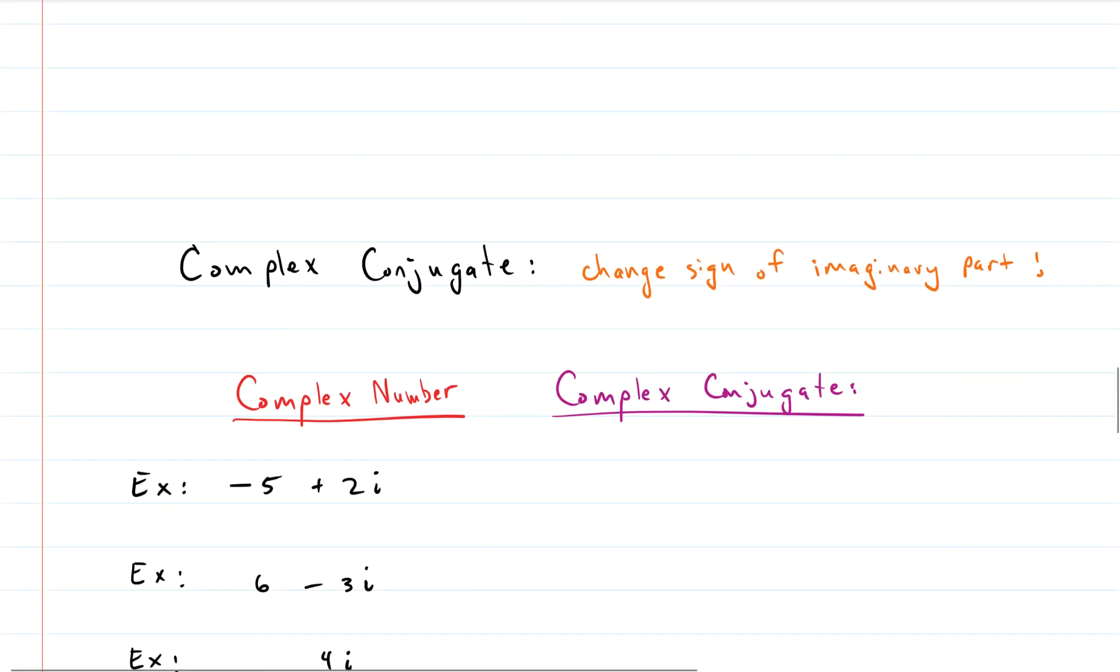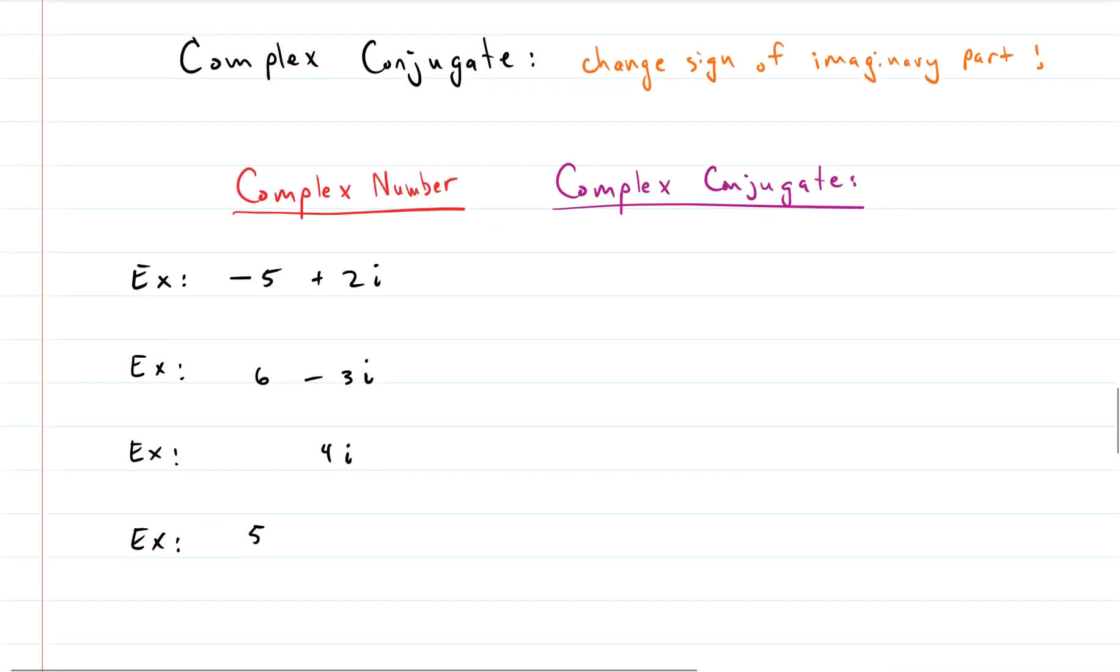Alright complex conjugates. Let's talk about complex conjugates. So we need complex conjugates because they help us divide complex numbers. So a complex conjugate is something that is paired with every complex number. So here in these examples you see four complex numbers. To find the complex conjugate of each of these, all we do is change the sign of the imaginary part. That's it.